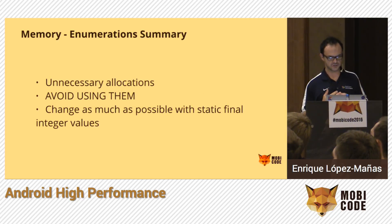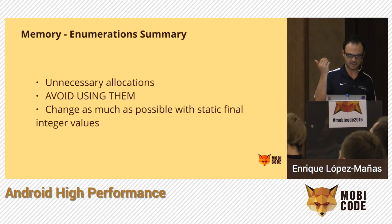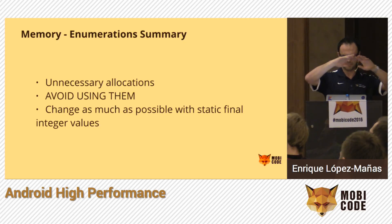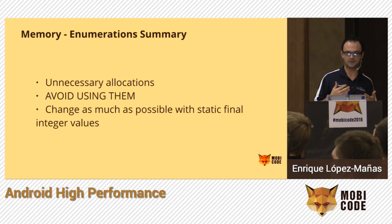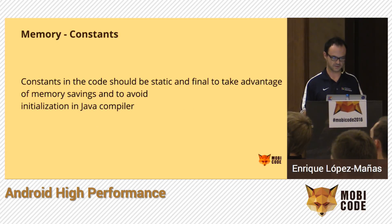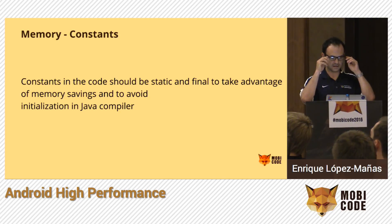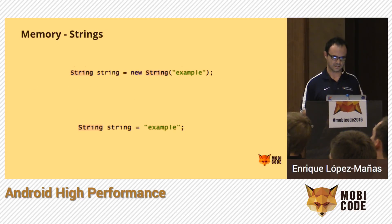As a summary: enumerations make unnecessary allocations, so avoid using them. It won't be an immediate improvement, but in the long term it may count. I remember one company I was consulting with that had several million lines of code and a lot of enumerations — some performance problems were happening because of that. Use static final integer values with the @IntDef annotation. Also, constants should always be static final to take advantage of memory savings and avoid initialization in the Java compiler — by doing this you can save a few bytes.